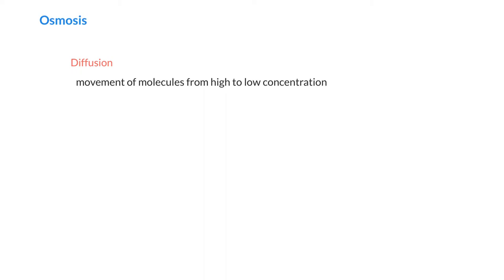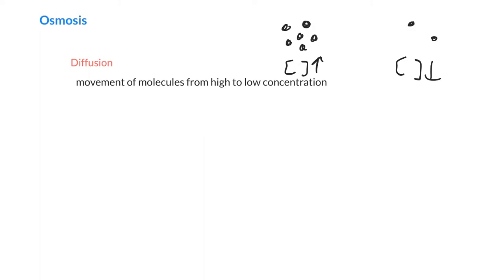So let's round off the chapter by talking about osmosis. Before we talk about osmosis, we need to describe diffusion. Diffusion is the movement of molecules from high to low concentration. We've got some molecules in solution — I'll draw them as little black dots here. We've got a whole bunch on this side, a high concentration, and maybe only a few over here, so we have a low concentration on this side. Diffusion basically tells us that molecules are going to want to move from the high concentration side to the other.